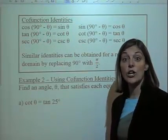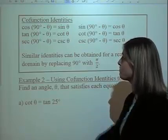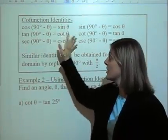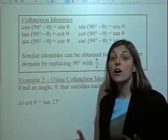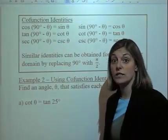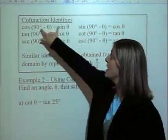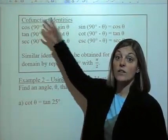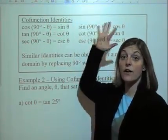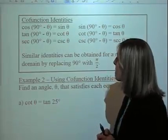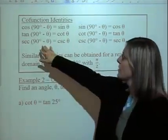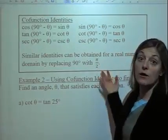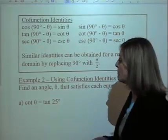Now we're going to take a look at co-function identities. We already know that cosine and sine, tangent and cotangent, secant and cosecant are co-functions. If the angle measures add up to 90 degrees, then the sine of one angle is equal to the cosine of the other, and vice versa. You can also represent this with π/2 if you're working in radians.